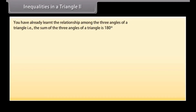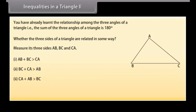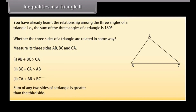We shall now study whether the three sides of a triangle are related in some way. Draw a triangle ABC and measure its three sides AB, BC, and CA. We observe that: AB plus BC is greater than CA; BC plus CA is greater than AB; and CA plus AB is greater than BC. Thus we conclude that the sum of any two sides of a triangle is greater than the third side.